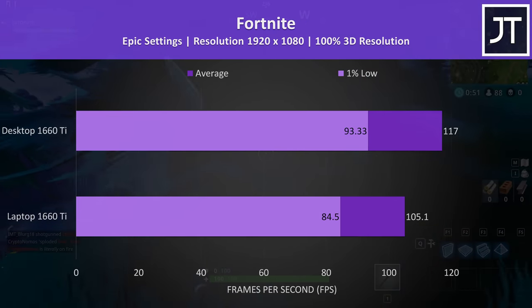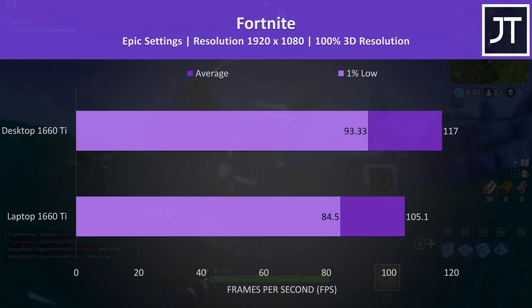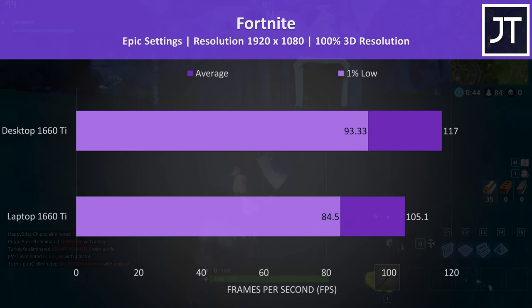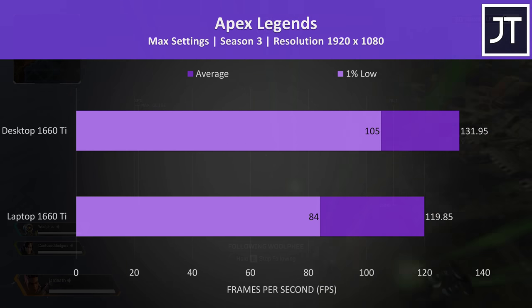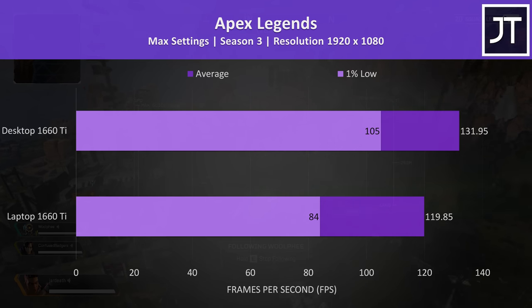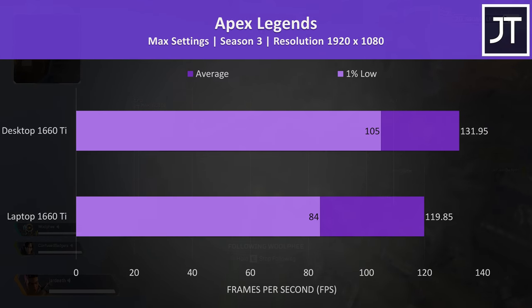Fortnite was tested using the replay feature. Compared to most of the other games tested, there was a smaller difference here, with the desktop graphics 11% faster in average FPS. Apex Legends was tested at max settings running through the same section of the game on both machines, and in this test the desktop graphics were just 10% ahead of the laptop, which is below average out of the titles tested.